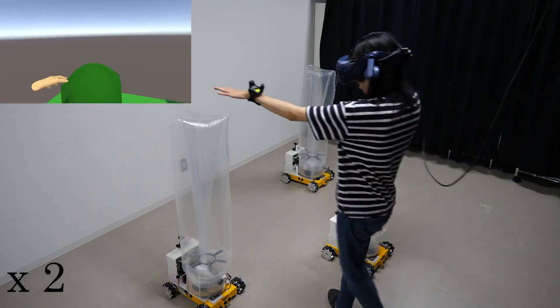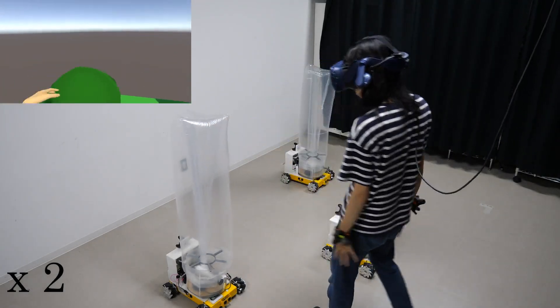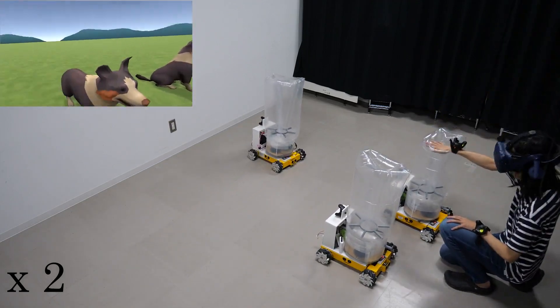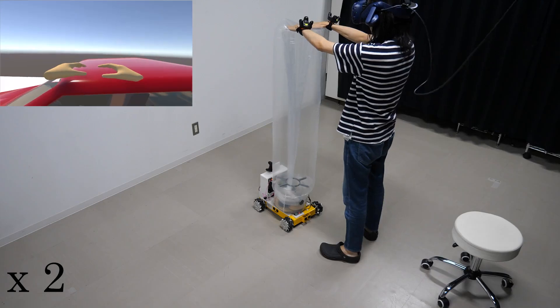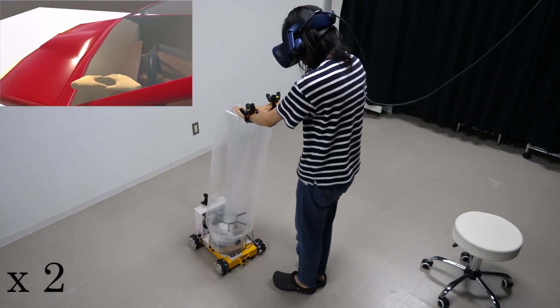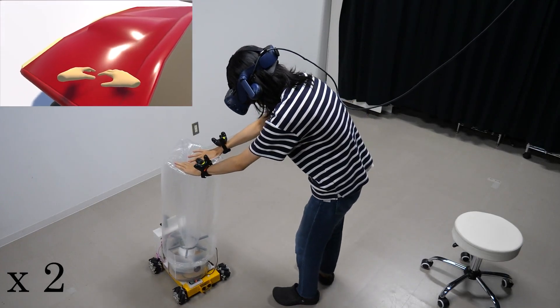This enables safe, scalable, and deployable haptic interactions at large scale. We developed three coordinated inflatable mobile robots, each of which consists of an omnidirectional mobile base and a reel-based inflatable structure.